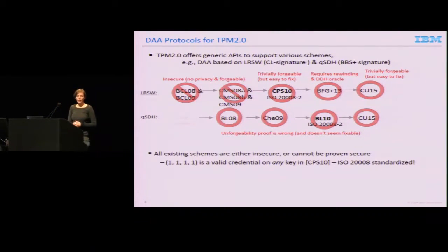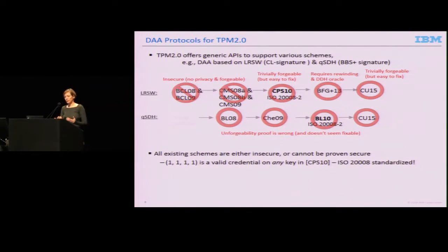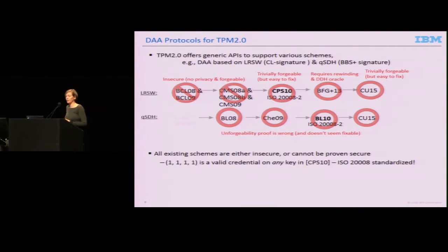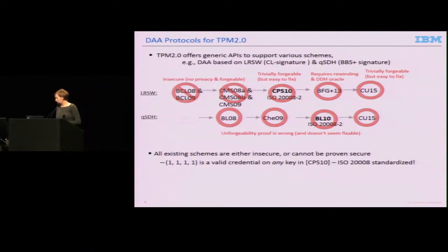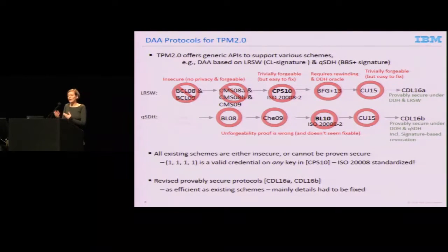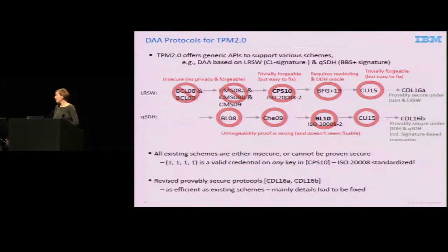It turns out not. They're actually insecure or cannot be proven secure by some inherent issues. In particular, the scheme that is ISO standardized and based on LRSW has a tiny flaw. It allows a very trivial credential that is valid for any attestation key to be accepted by a verifier. That's pretty bad. We proposed two new protocols based on LRSW and QSDH and proved them secure in our model. They're as efficient as existing ones because they're very similar to previous schemes, but we had to fix details, add some checks, add some extra proofs, and add a few elements. It doesn't impact efficiency in a big deal.